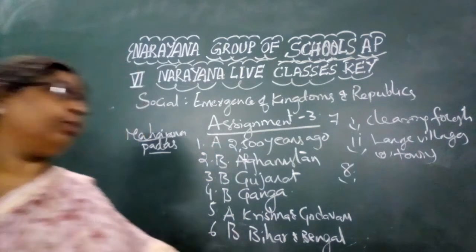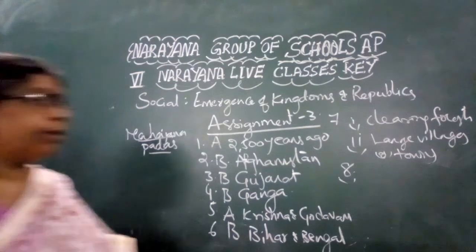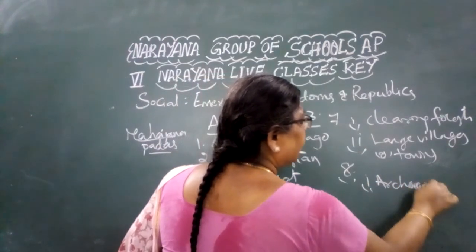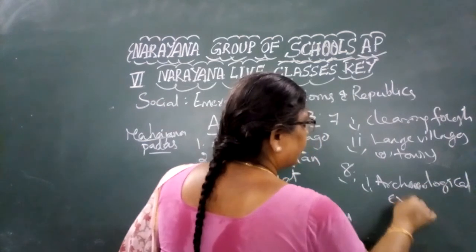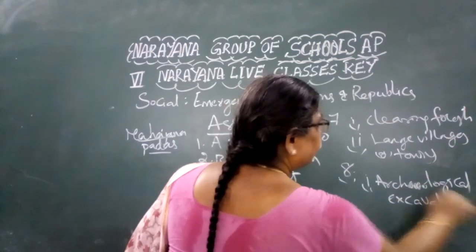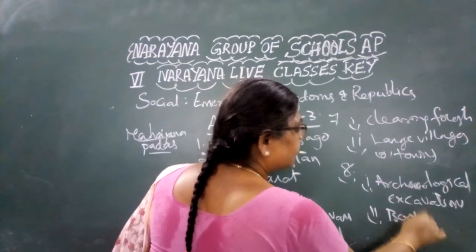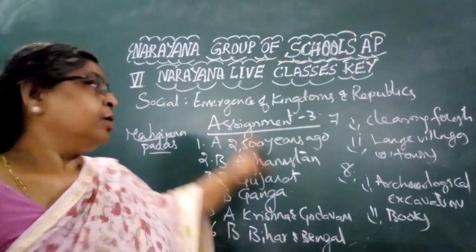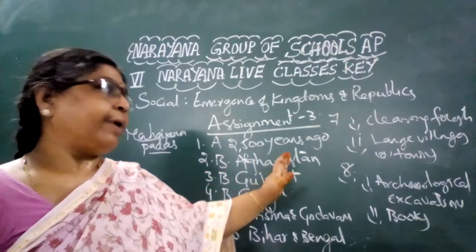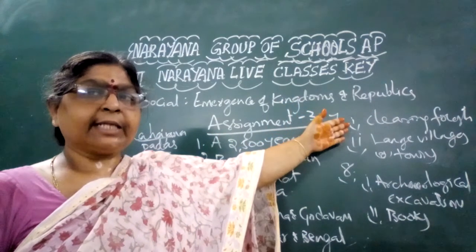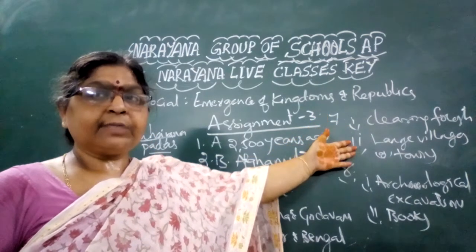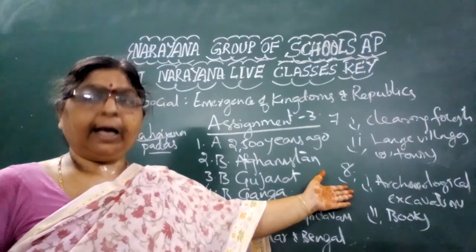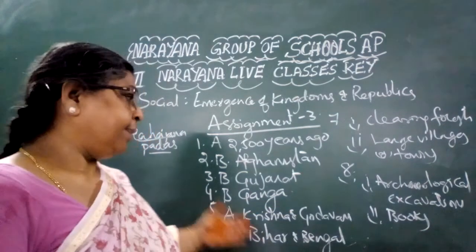How did we come to know about these Mahajanapadas? The first source is archaeological excavations — excavations that took place in the earth's surface. The second source is the books that were written during this particular period. These two are the sources to know about this period, approximately 2500 years ago.